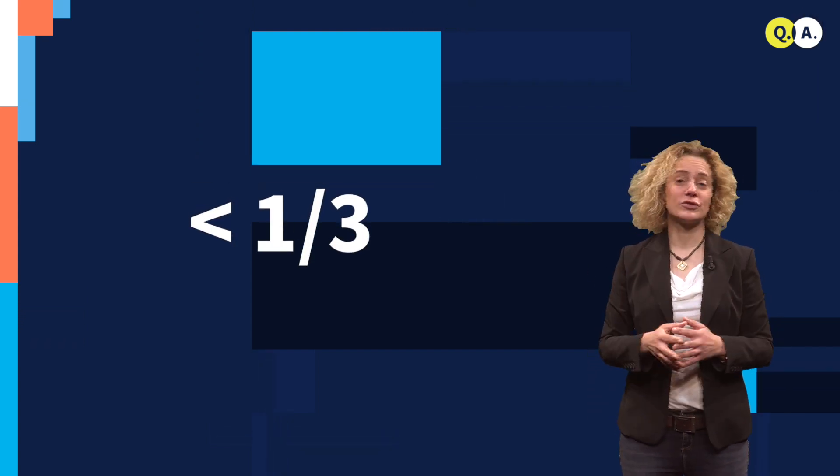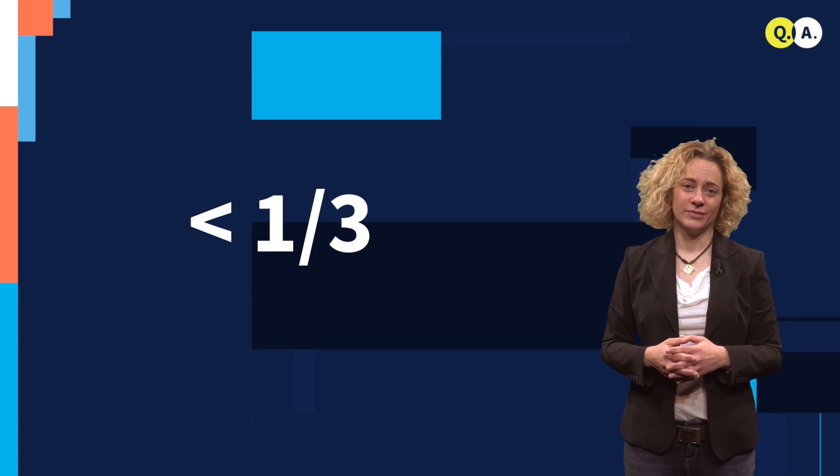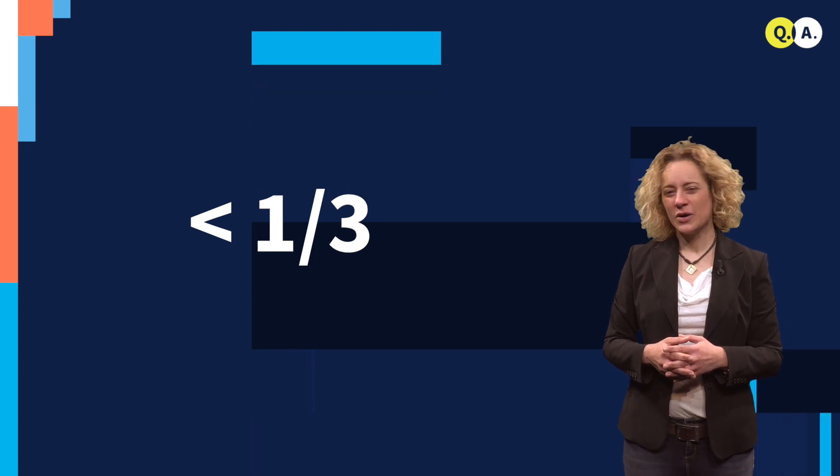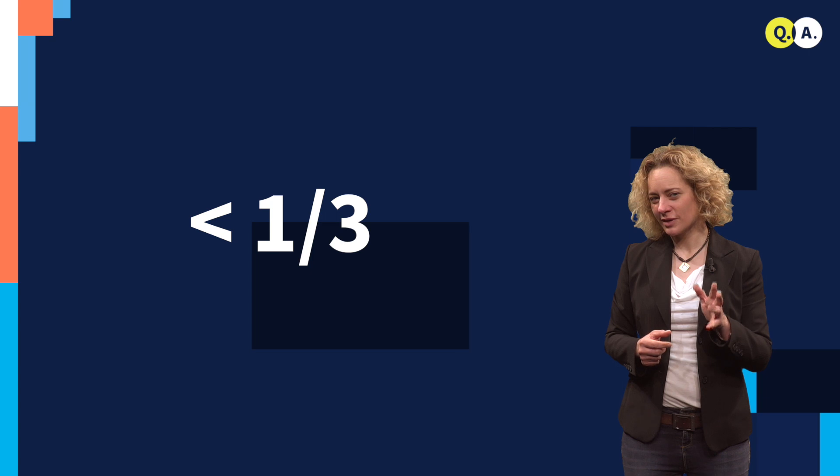And our protocol should work if not too many of the robots are broken. So what does this word too many mean? We want that the protocol works if, for example, less than a third of the robots are broken.